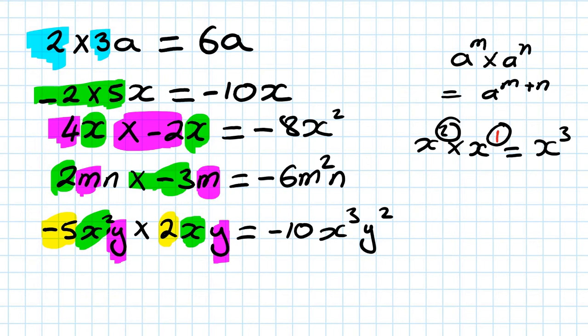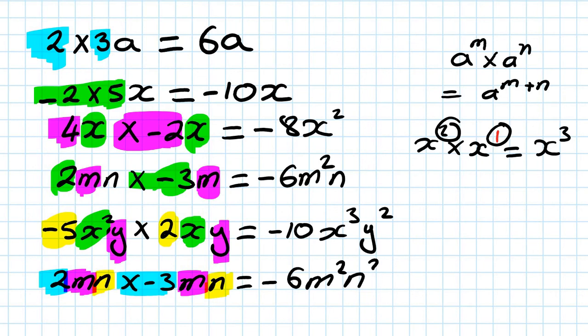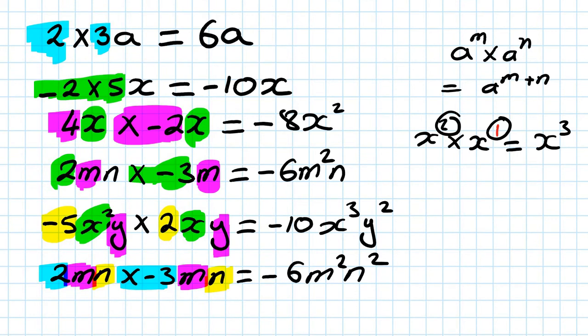Next one: 2mn times negative 3mn. Two times minus 3 gives negative 6. Then m times m is m squared, and n times n gives n squared. The answer is negative 6m²n². Now let's move on to dividing algebraic expressions.